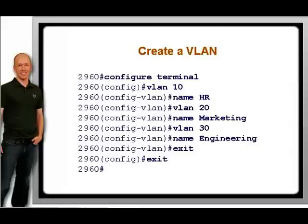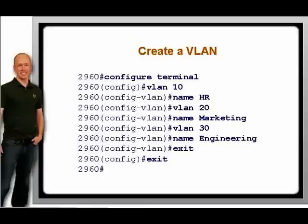To create VLAN 10, named HR, VLAN 20, named Marketing, and VLAN 30, named Engineering, use these commands. The global config prompt changes to the config VLAN prompt when you create the first VLAN. It is okay to stay in the prompt to continue creating the VLANs. With these commands, you can create all your VLANs at once, or you can go back later and add some more as needed.